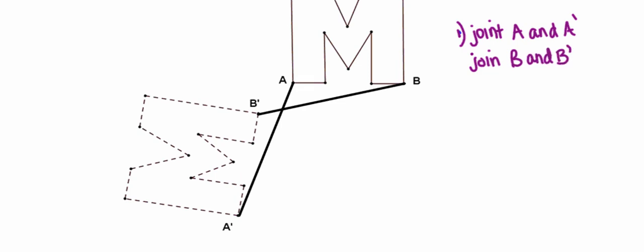So I'm going to go back and fix that. Use my straightedge to join A with A prime and join B with B prime. So now I've got two line segments.